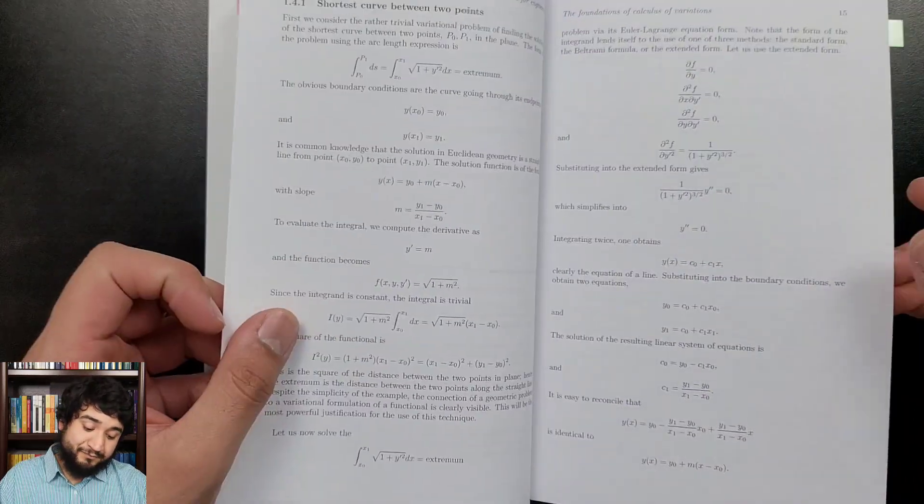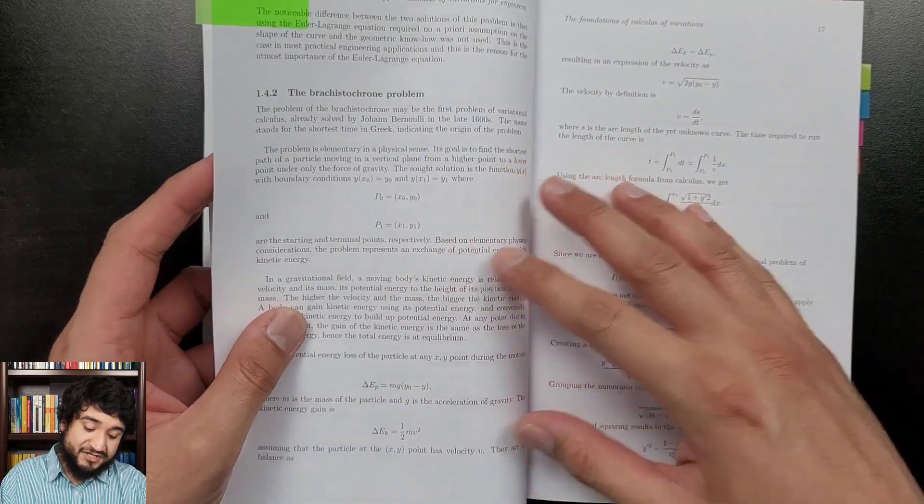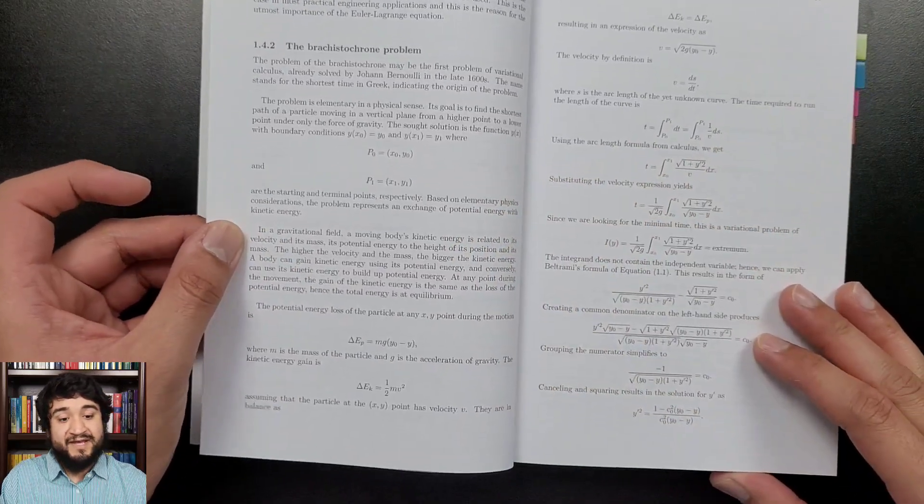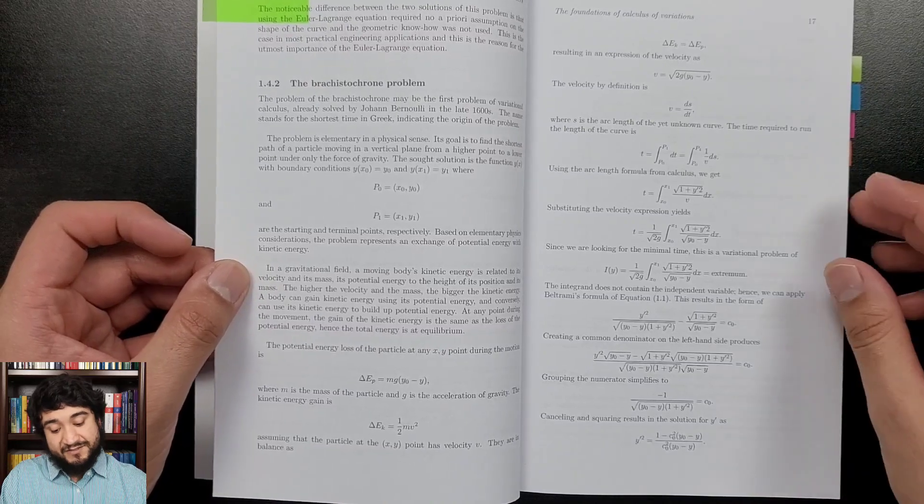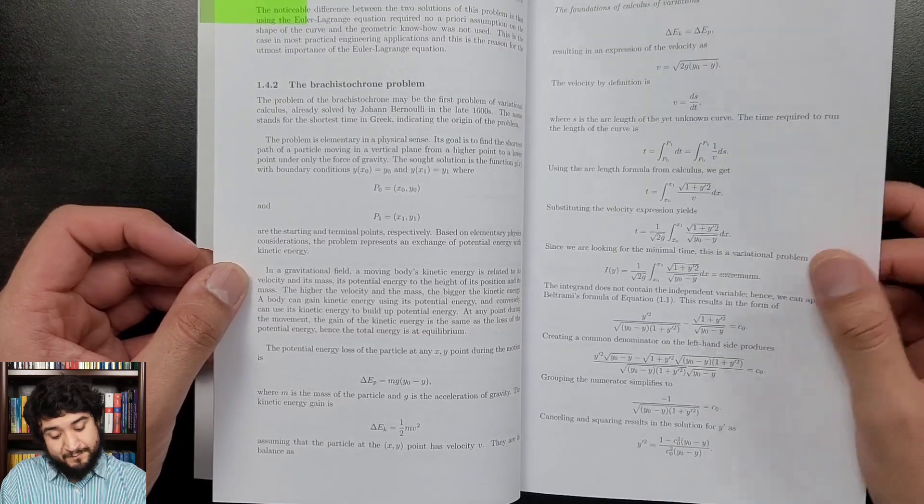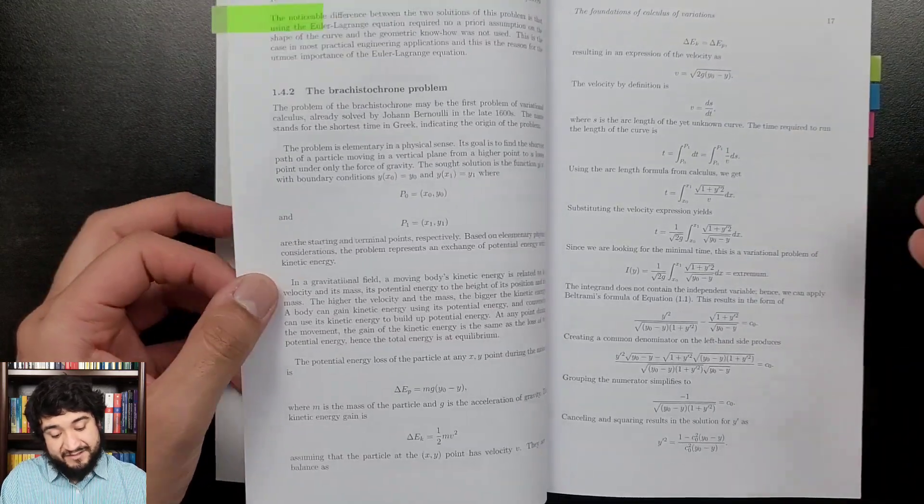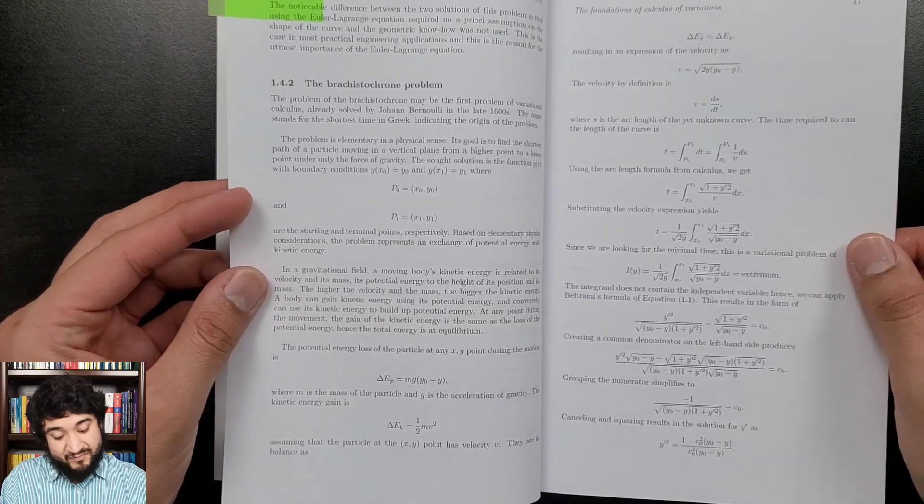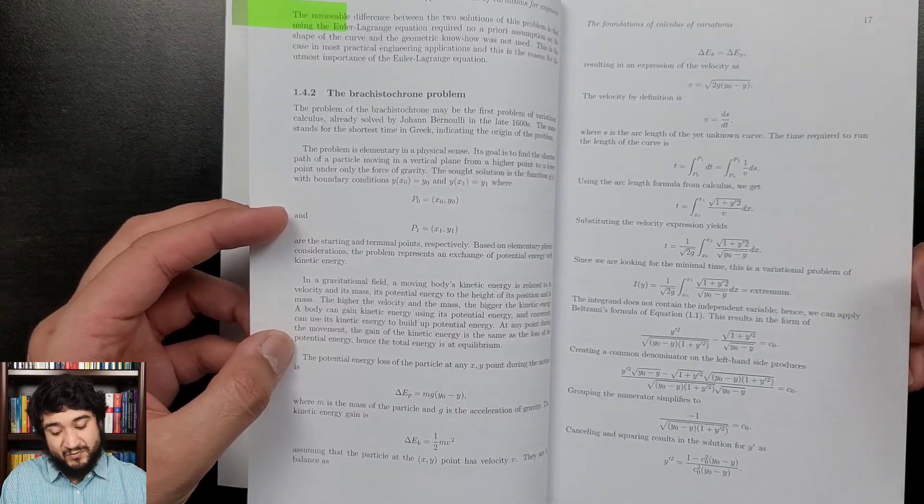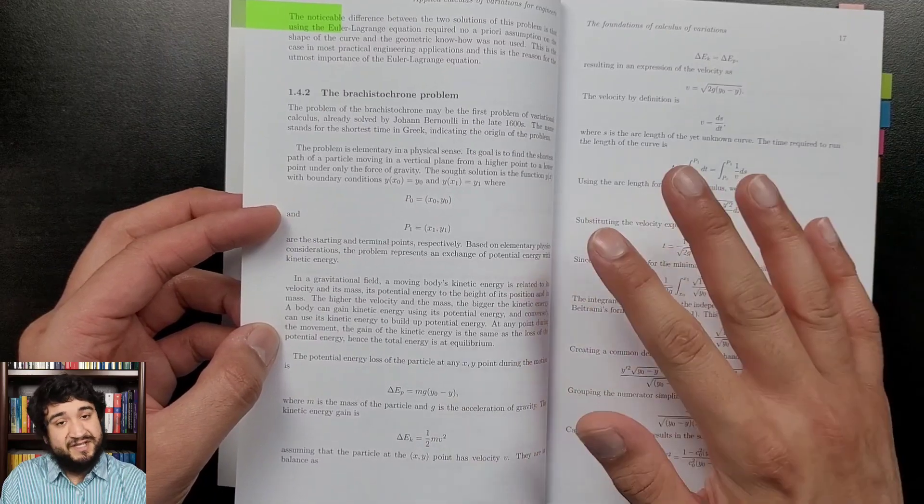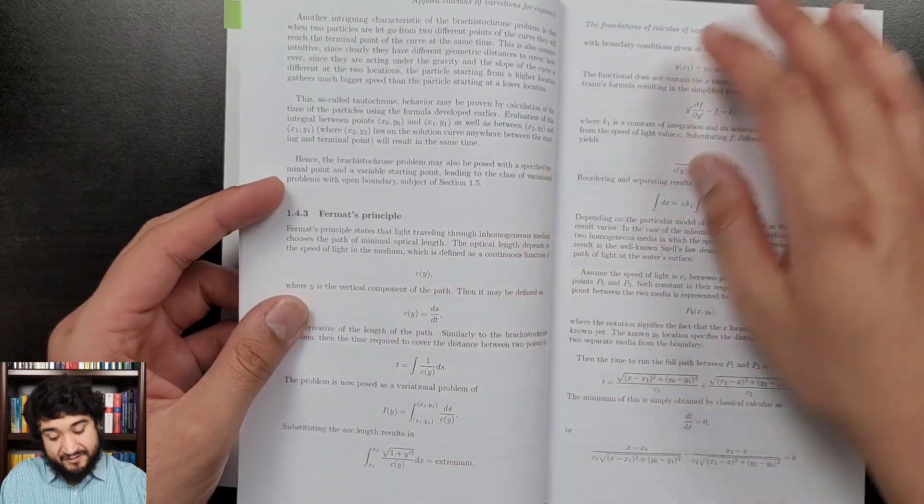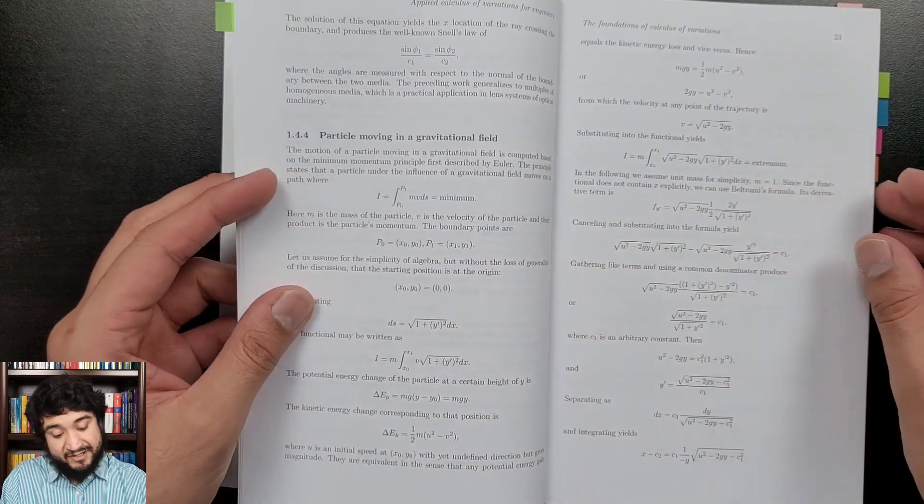Now, here on this section is where he gets into some applications. So this is the problem that basically started this entire field of calculus of variations—the Brachistochrone problem, and I hope I'm pronouncing that correctly. So my physics background isn't very extensive, but I could follow this. I thought it was pretty straightforward. Again, if you don't have any interest in physics and just want the calculus of variations, you can 100% ignore this section and the preceding two sections as well on Fermat's principle and particle moving in a gravitational field.